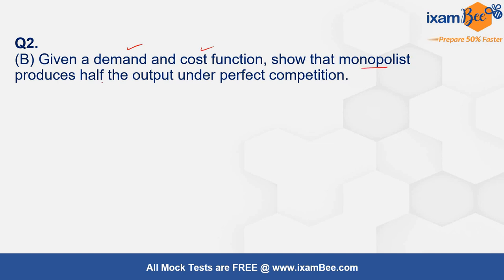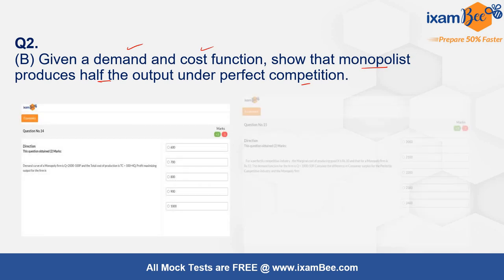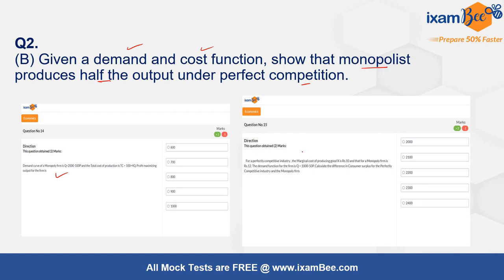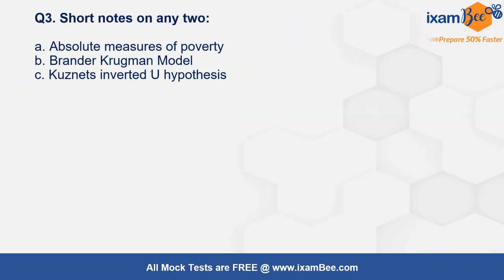Part B of the second question gave a demand function and a cost function, and you had to show that the monopolist produces half the output under perfect competition. A similar question appeared in the mock test. Given the demand and cost functions, you perform profit maximization for both the monopolist and the competitive industry and compare the quantities arrived at in equilibrium.